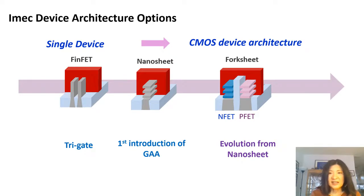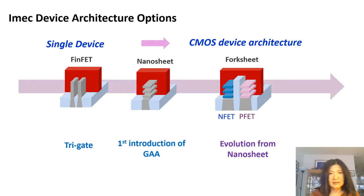Nanosheet has already been introduced to industry. Looking forward, imec has options for forksheet — an evolution from nanosheet. The major device change going from FinFET to nanosheet to forksheet is the shift from single device to CMOS device architecture, which is a very subtle but important change.